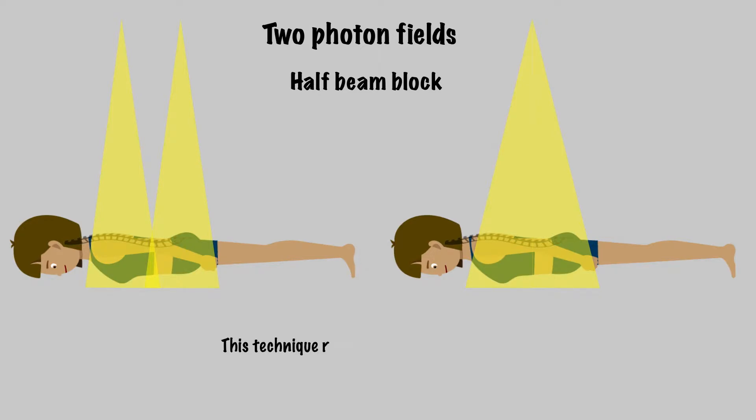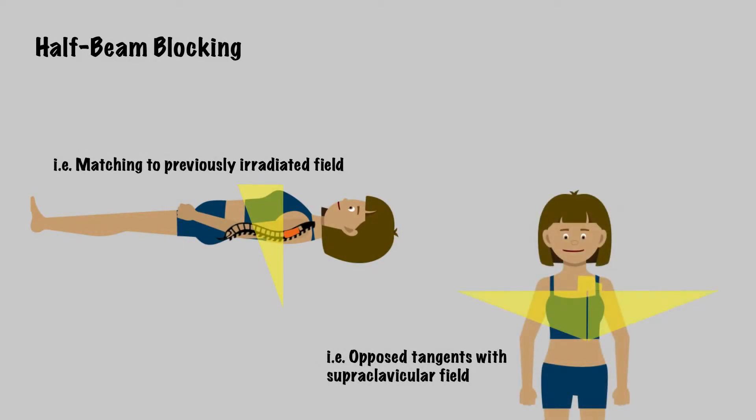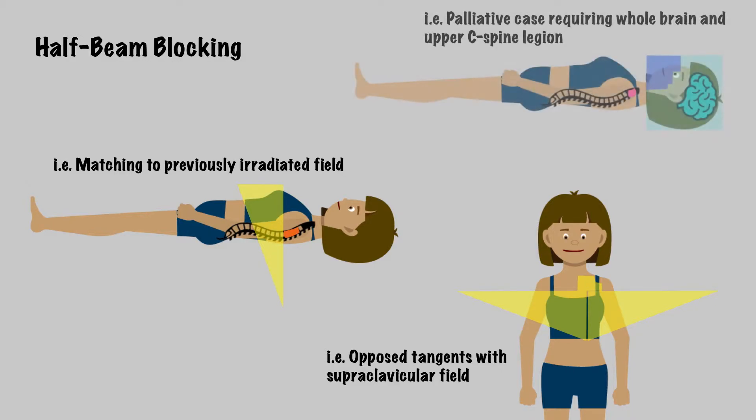However, this restricts your field size by half. We might use this technique to limit overlap dose to a previously irradiated field, when treating some breast patients with opposed tangents and a supraclavicular field, or when patients require two techniques, such as opposed laterals superiorly and an APPA approach inferiorly, to treat the disease but avoid treating through the shoulders.